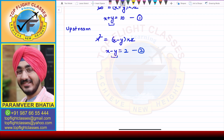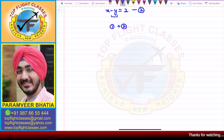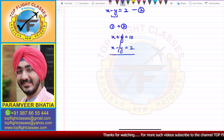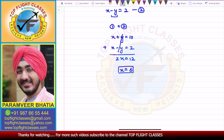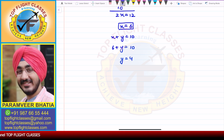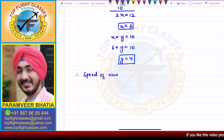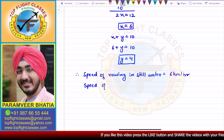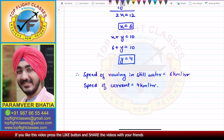Now we have two equations. Since one has minus y and the other has plus y, adding both equations will eliminate y. Adding equation one and equation two: x plus y equals 10, plus x minus y equals 2, gives us 2x equals 12, so x equals 6. Therefore the speed of rowing in still water is 6 km per hour, and substituting back, the speed of the current y is 4 km per hour. That is what is required in this question.